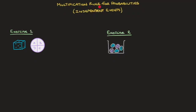In this video, we learn about the multiplication rule for probabilities, and to begin with, we'll be working with independent events. To see how the multiplication rule works, we're going to be working through two examples, but first let me get the formula out of the way. The multiplication rule states that given two independent events, A and B, the probability of A AND B occurring equals the probability of A times the probability of B. Make a note of that.